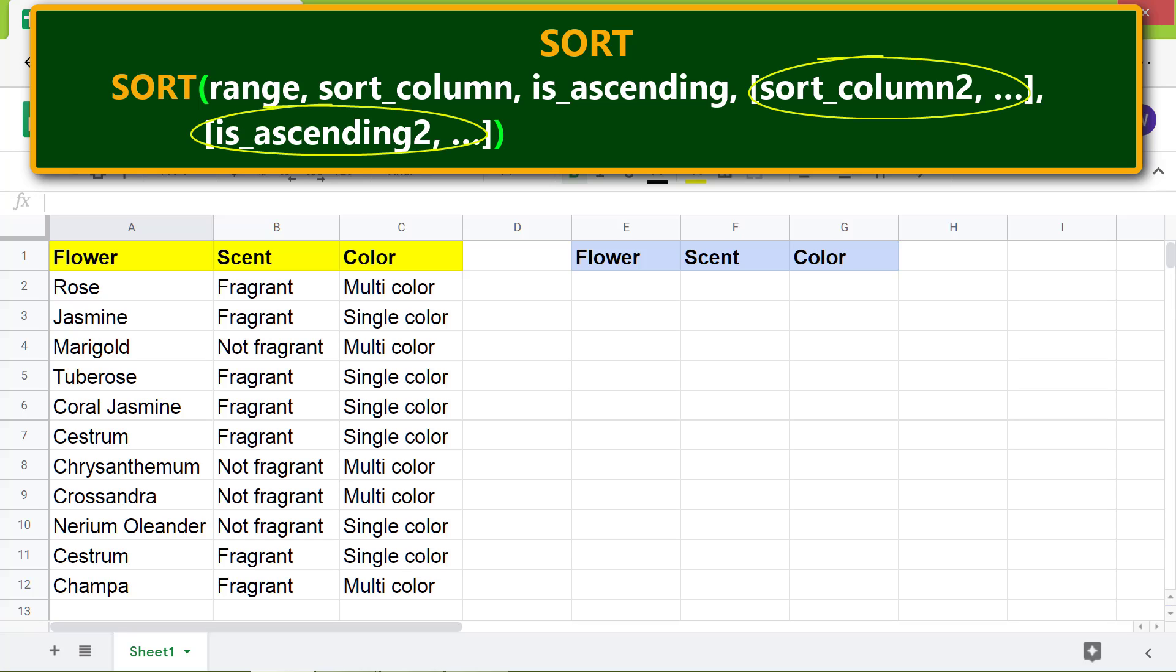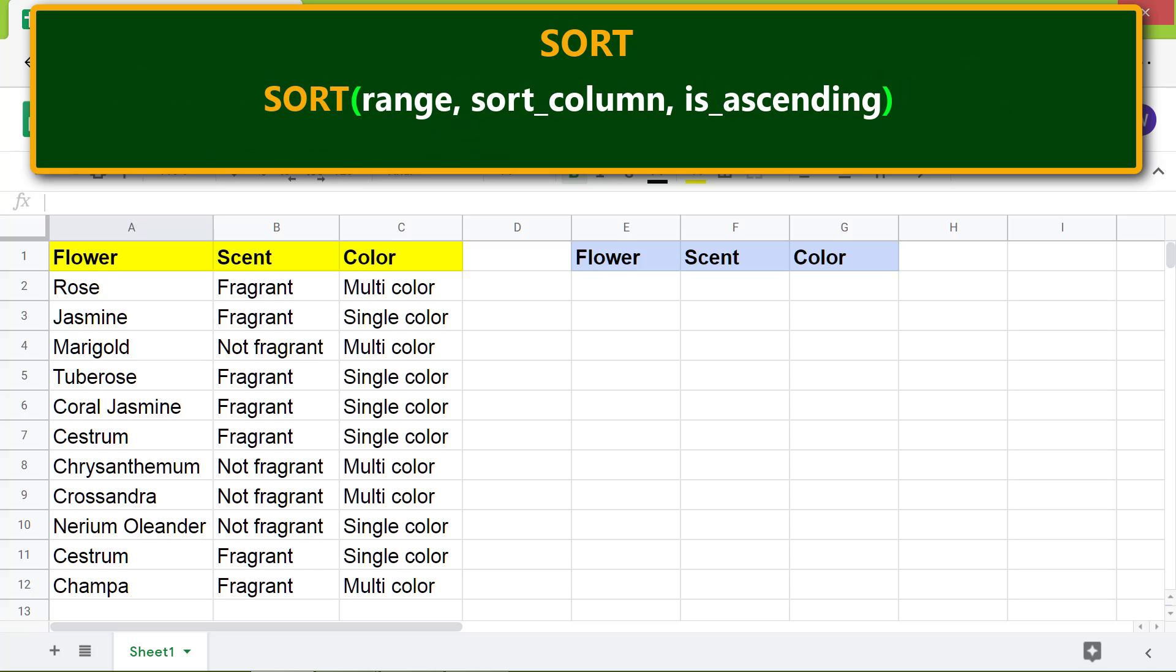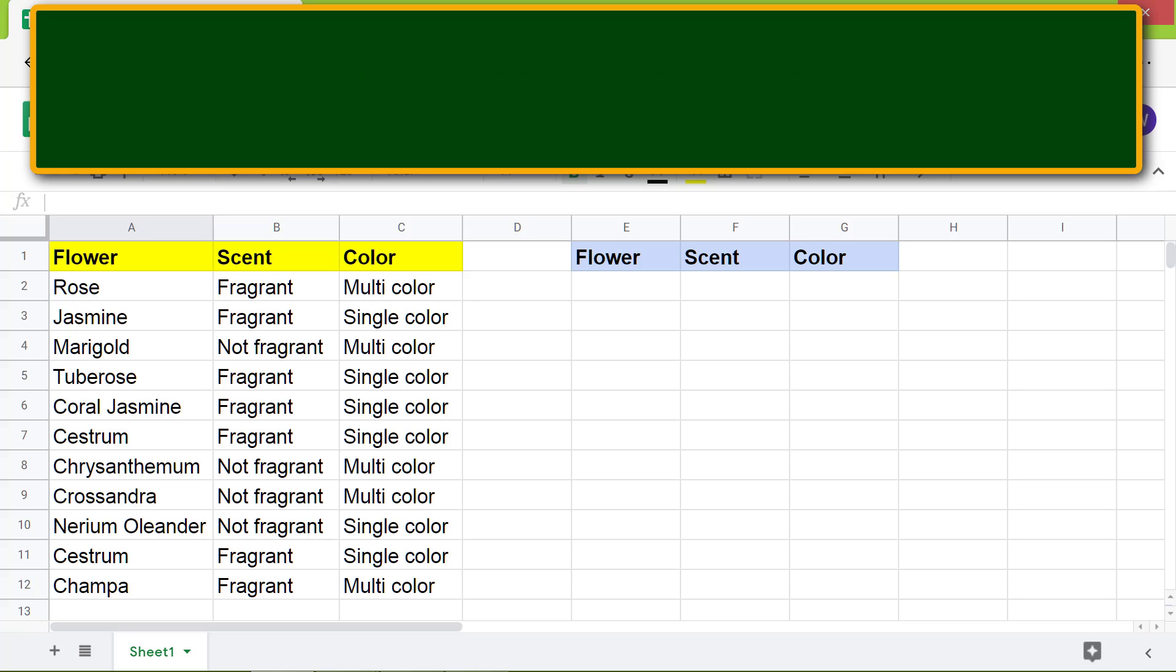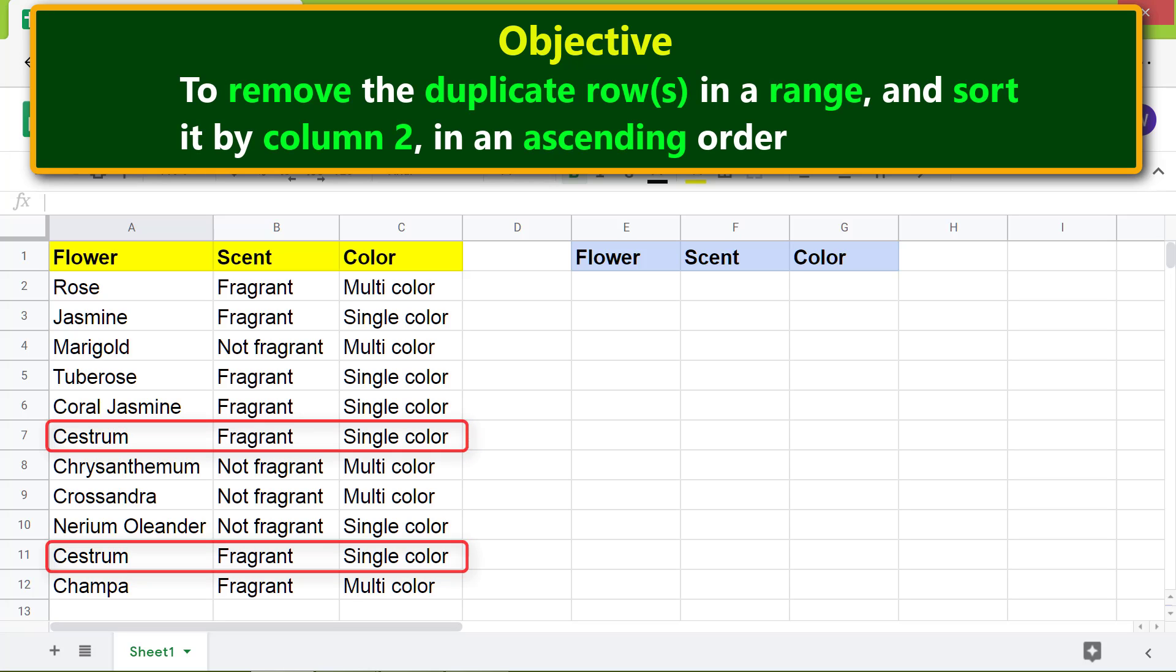So the revised format of SORT is... Now we will nest UNIQUE inside SORT by replacing range with the UNIQUE function. Here is the objective: to nest the UNIQUE function inside SORT to remove the duplicate rows in a range and sort it by column 2 in ascending order.